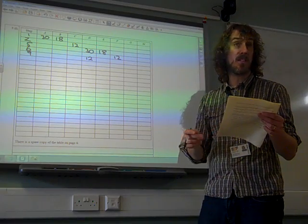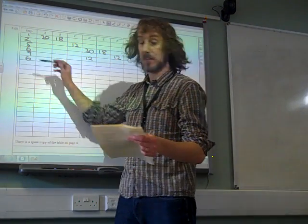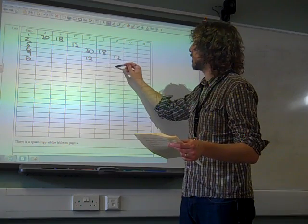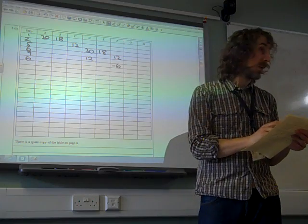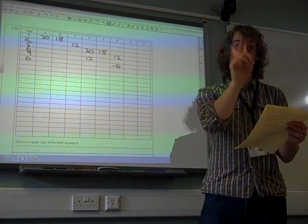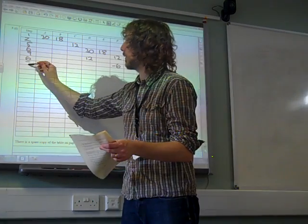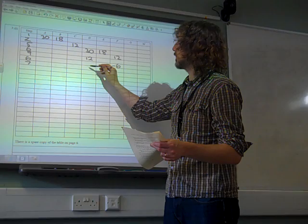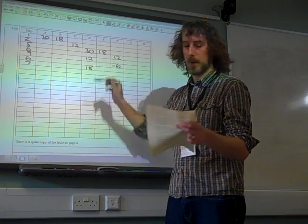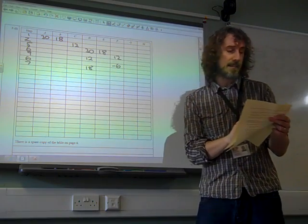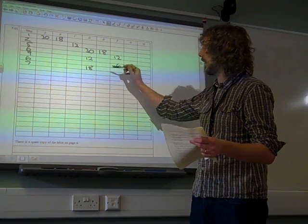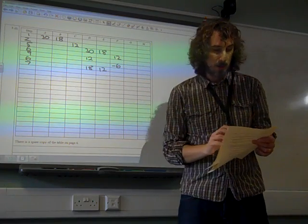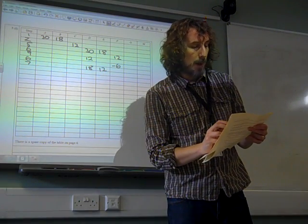Step six said, let f equal d minus e. Step seven, if f is less than zero. Ah, this time it is. So we're going to do step seven. Let d equal e. So what is e? 18. So we've got 18 there. And let e equal f plus d. E equal 18 plus minus six is 12.